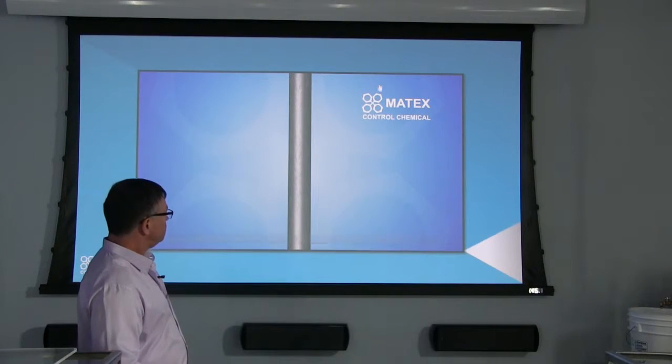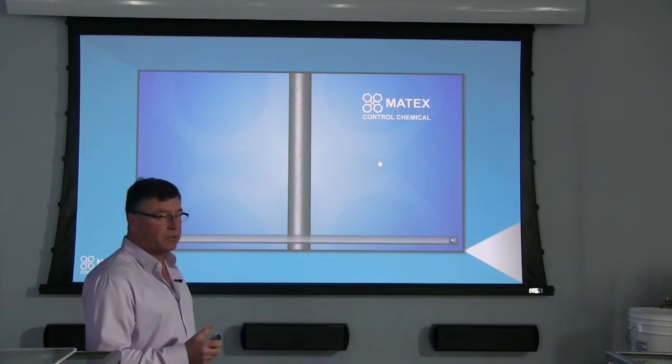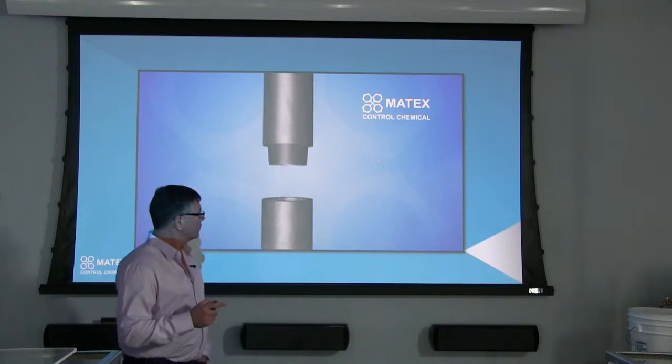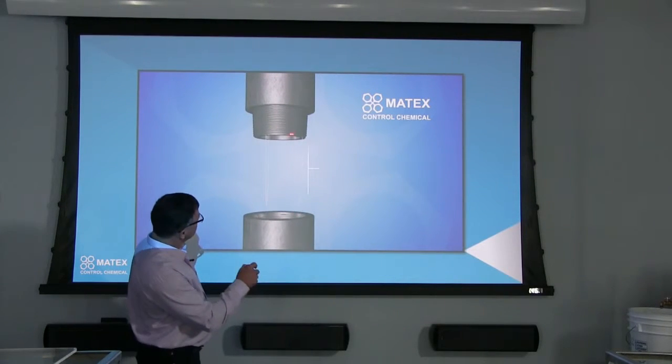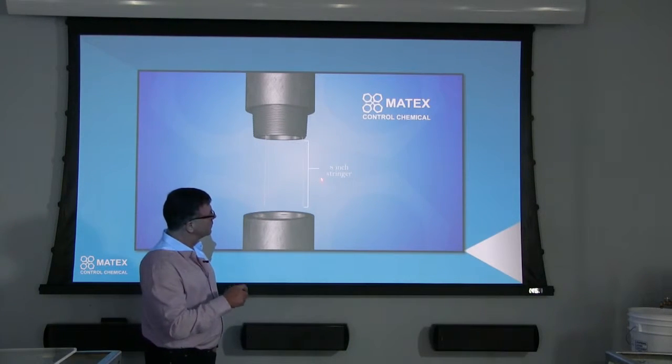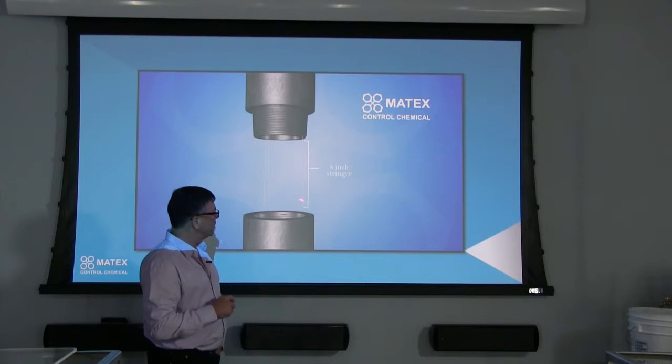When you have the fluid injector hooked up and you're injecting the product in there, every time you make a connection, either out of the drill pipe or out of the top quill, you'll see a couple of stringers hanging down there. What you're going to want is anywhere between an 8 inch and 10 inch stringer hanging out of your drill pipe.